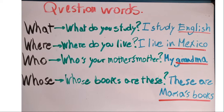Number four: 'whose.' 'Whose' is used to talk about possession — who something belongs to. For example: 'Whose books are these?' — These are Maria's books. Maria is the owner, so we use 'whose' to talk about who possesses something.